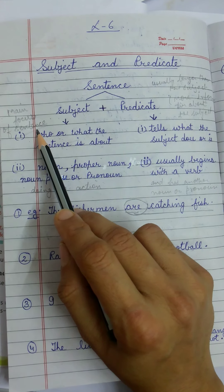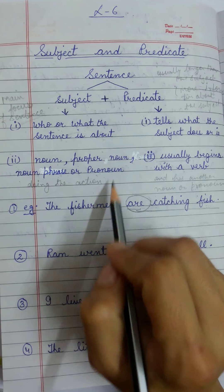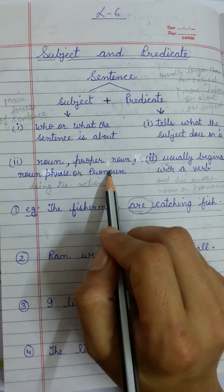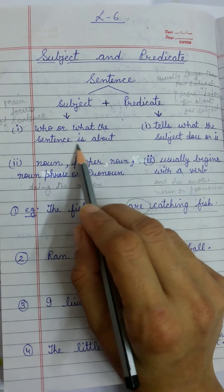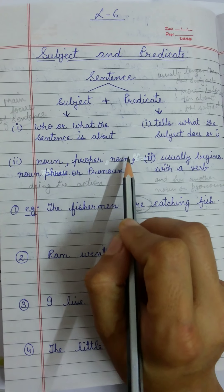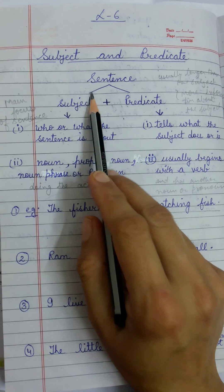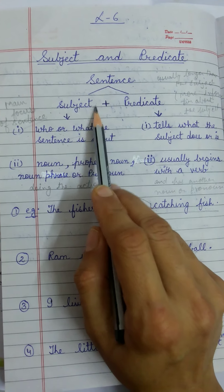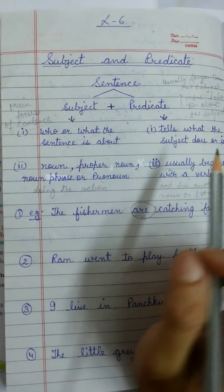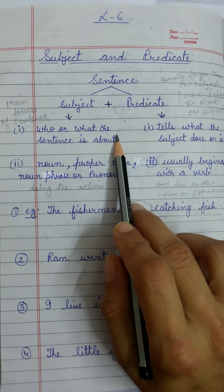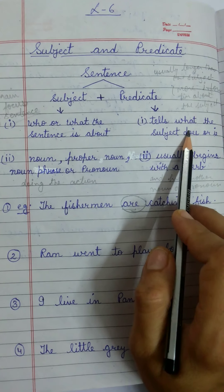That means while reading the sentence, if I get a picture of that thing, it could be a subject. My subject is a noun, pronoun, noun phrase, or proper noun. We are going to understand all these with the help of certain examples. These are the ones who are doing an action — so always my subject will be the one who is performing or doing an action. And what action has been done will be my predicate.